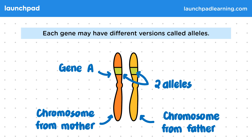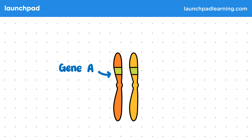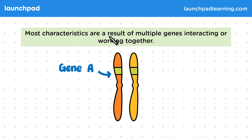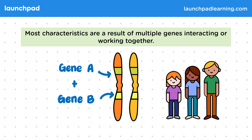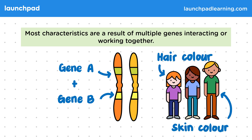So are all characteristics controlled by single sets of genes? Most characteristics are a result of multiple genes interacting or working together. For example, a characteristic may be the result of both gene A and gene B, which is located elsewhere in the genome. Hair colour and also skin colour are examples of this. Rather than being controlled by a single gene, many genes work together, allowing a diverse range of hair and skin colours.